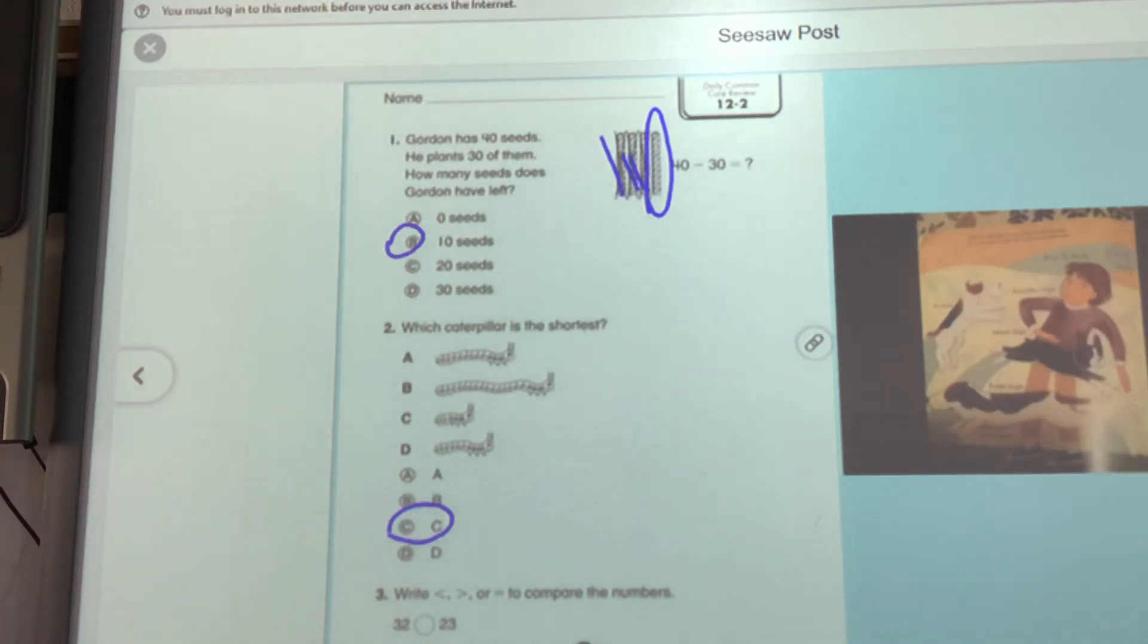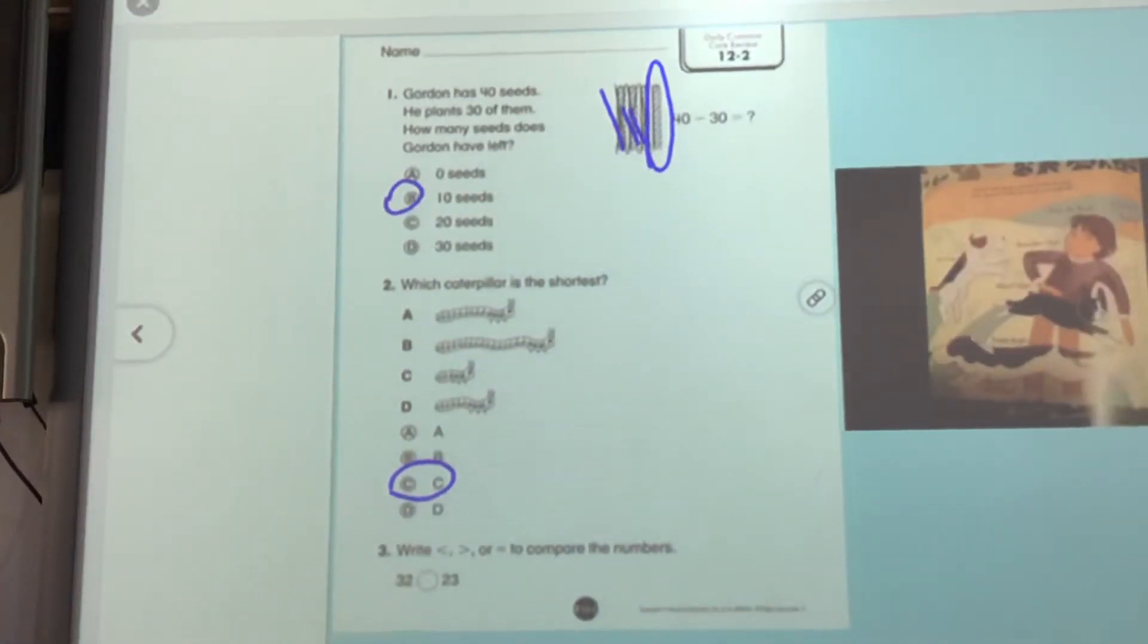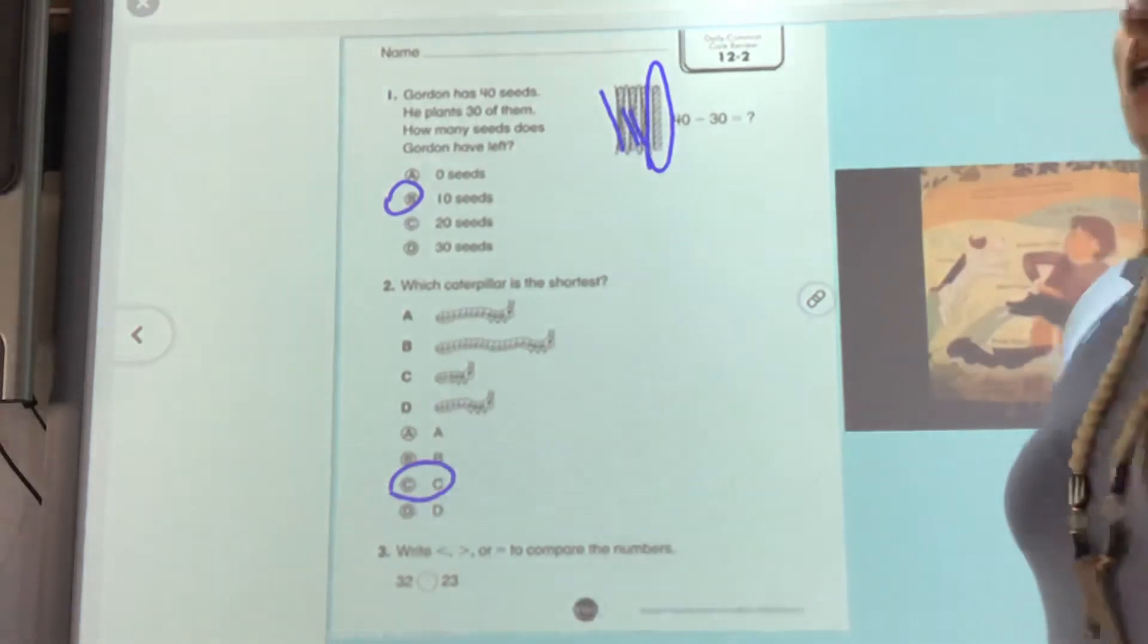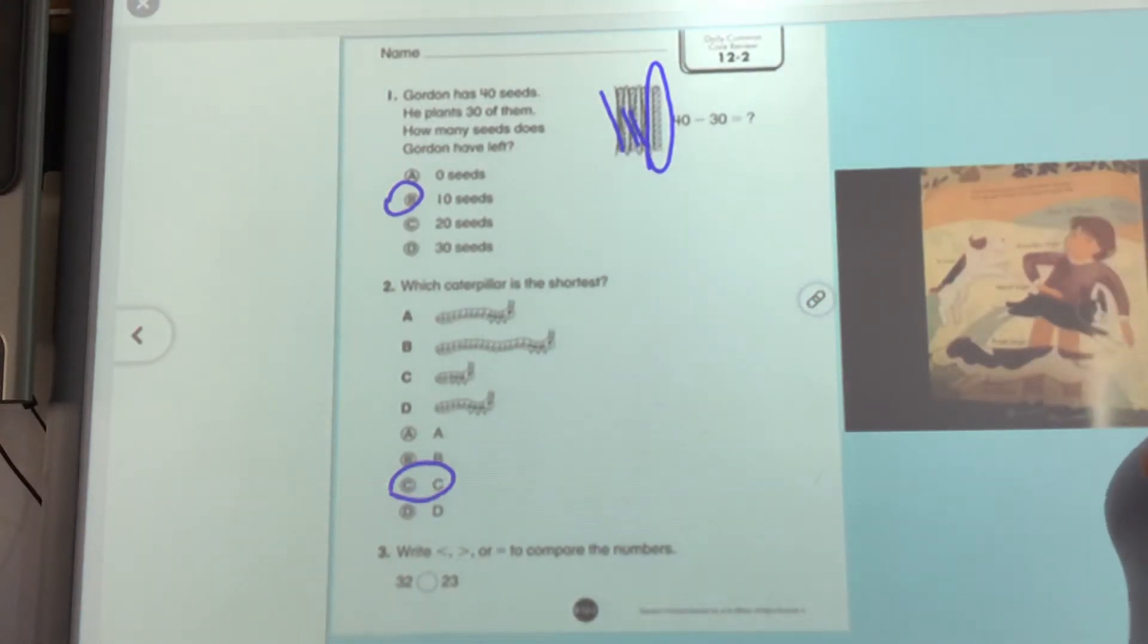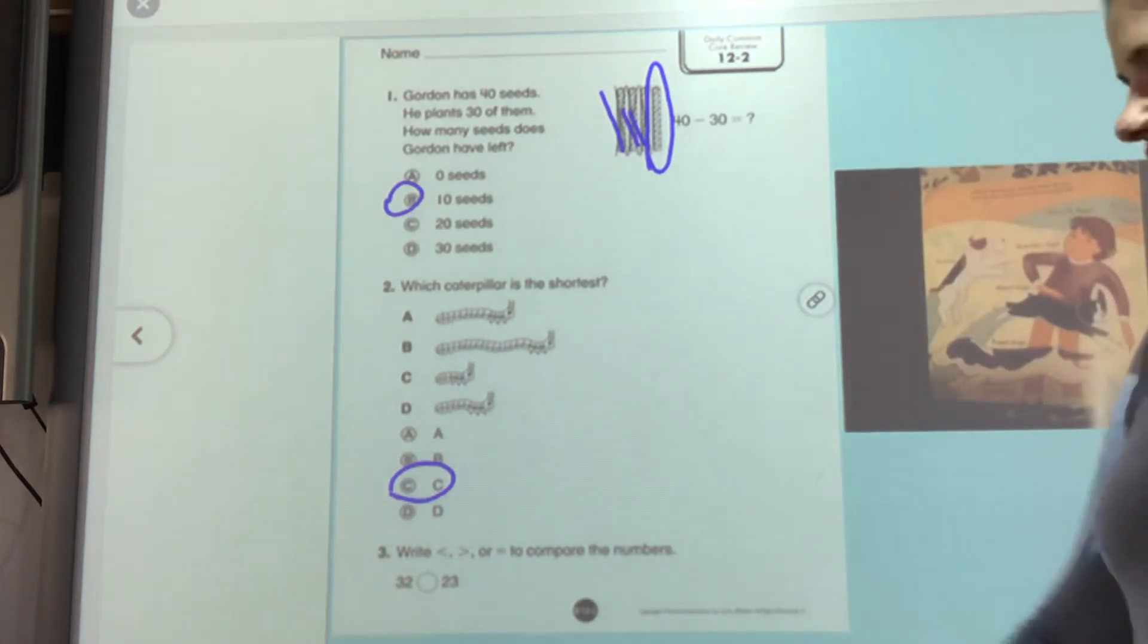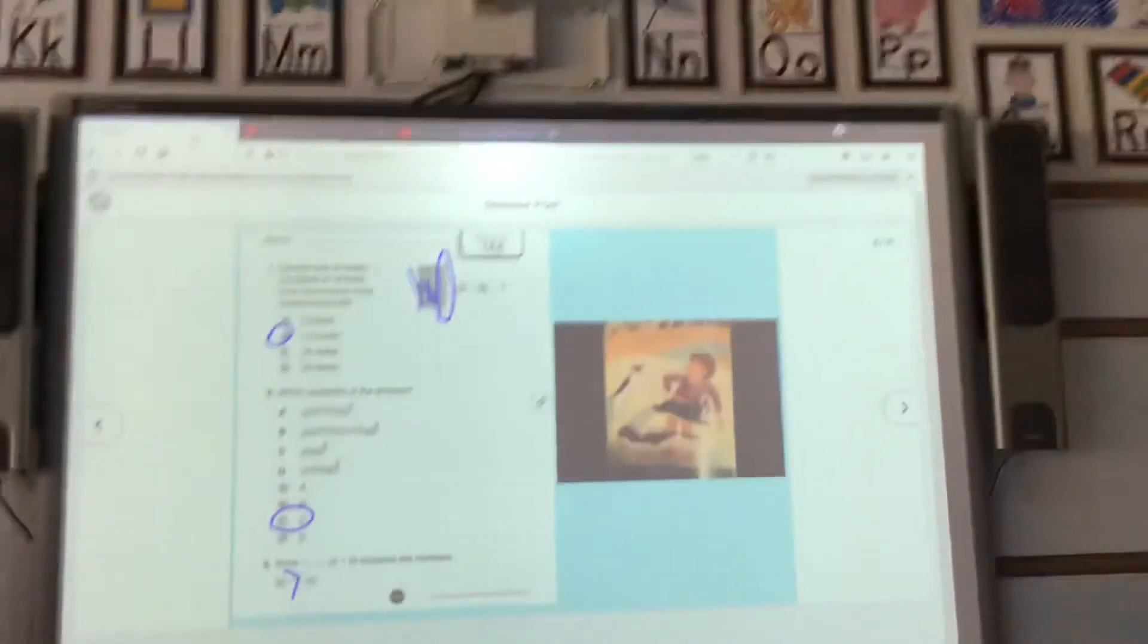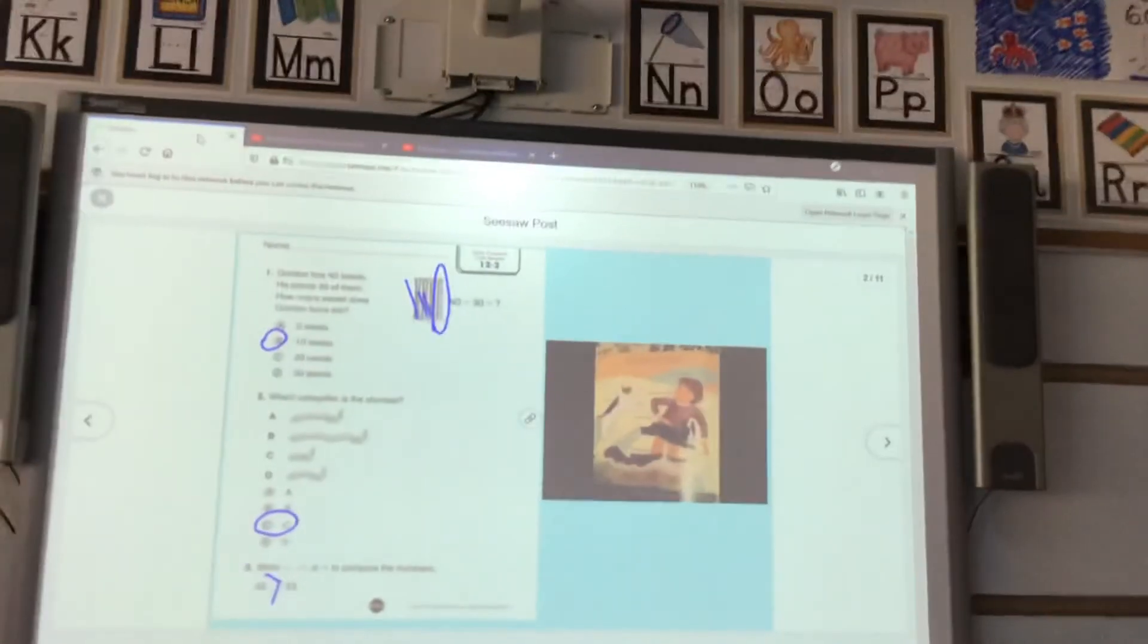And the last one. Write less than, greater than, or equal to to compare the numbers. We've talked about this. We know that when we compare numbers, the number that the alligator eats is always the smaller number. And our smaller number in this is the, or the. The alligator always eats the bigger number. Ms. Harrell just said it completely backwards. He always eats the bigger number. So he's going to eat the number 32. Just erase all of that that Ms. Harrell just said from your brain. Because I just got it wrong. So like we've told you guys before, sometimes teachers make mistakes. It's okay. Everybody makes mistakes.